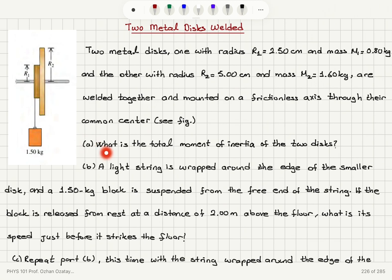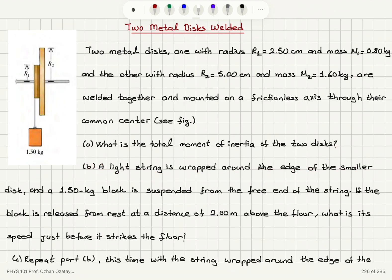Part A: what is the total moment of inertia of the two discs? Part B: a light string is wrapped around the edge of the smaller disc and a 1.5 kg block is suspended from the free end of the string.